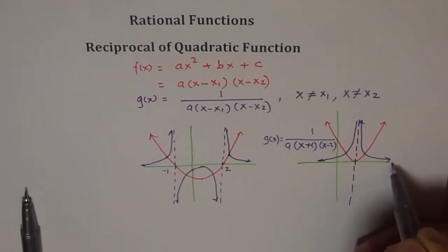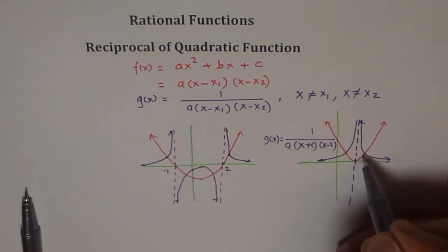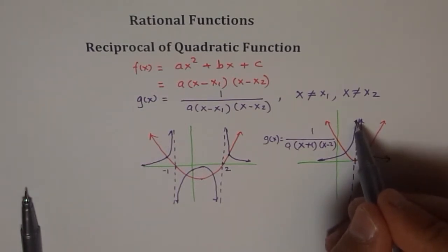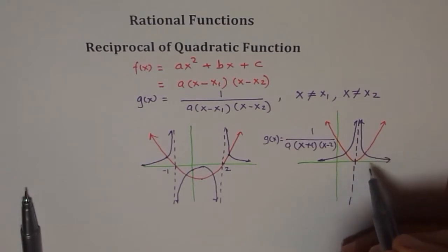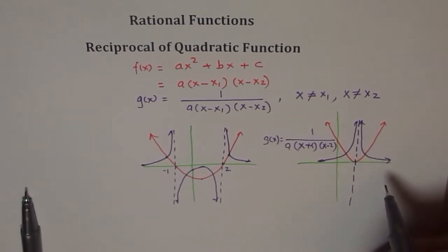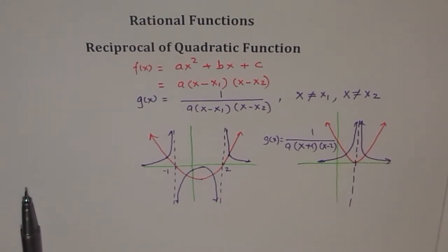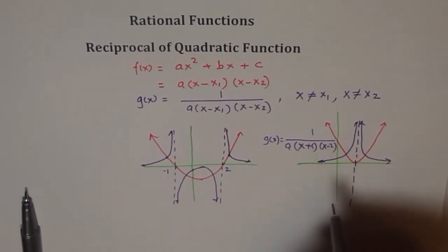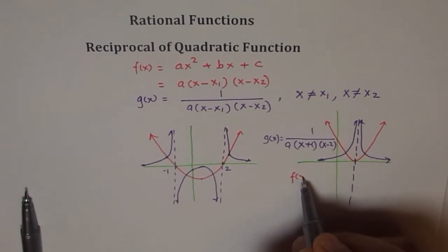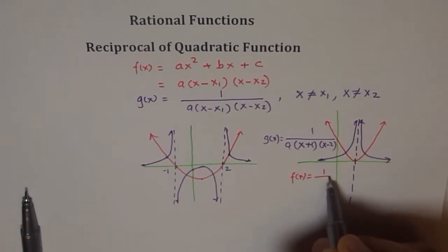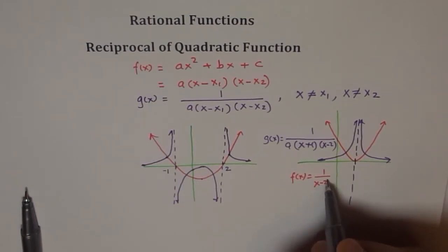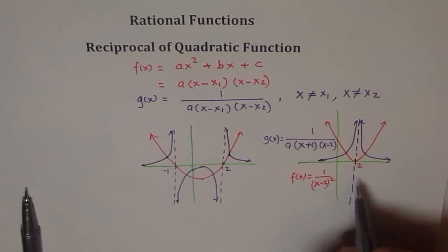The example here could be f(x) = 1 / (x − 2)². In that case we only have a root at x = 2, and that point becomes the single vertical asymptote. On the positive side the graph rises on both sides toward the asymptote and flattens out toward zero on both ends — the graph is entirely above the x-axis.